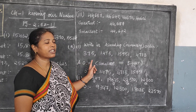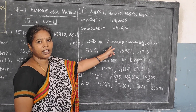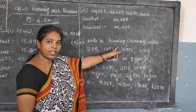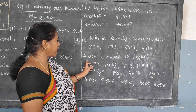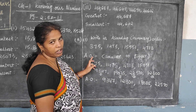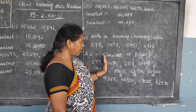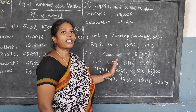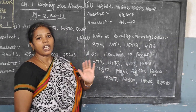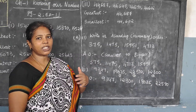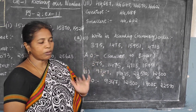Next, second bit, first question — see, children. Write in ascending order. Ascending order is nothing but increasing order — from the smaller number to the bigger number, you will write. In short you write AO. Ascending order means increasing order. Sometimes they give 'write in ascending order,' sometimes 'write in increasing order' — both mean smaller number to bigger number.